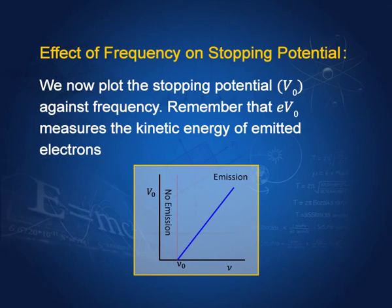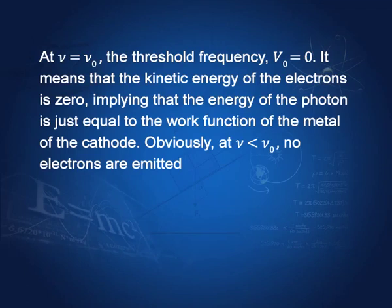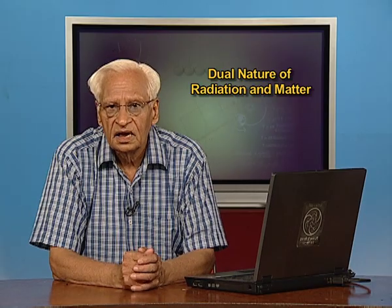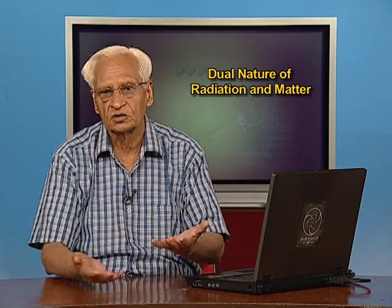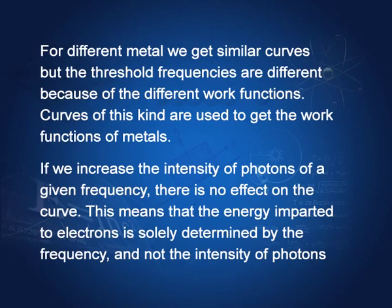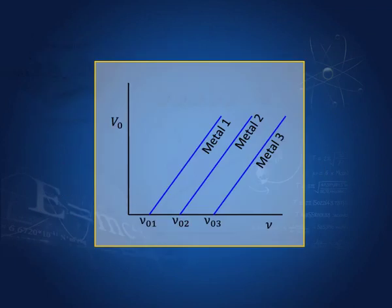If we plot stopping potential V₀ against frequency ν, we find that below the threshold frequency ν₀ there is no current — this is the minimum frequency that gives just sufficient energy for electrons to come out of the surface. Above ν₀, as frequency increases, V₀ increases. If we plot this for various metals, we find different threshold frequencies, and this is the procedure for finding the work functions of various metals: the work function equals h·ν₀ for each metal.